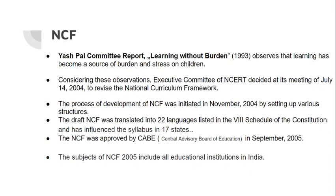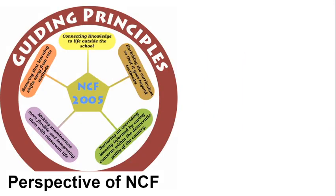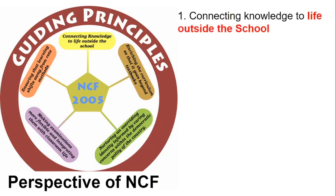Now let's move to the main topic — what are the main features and main principles on which NCF works. There are 5 guiding perspectives on which NCF basically operates. The first one says: do not limit children's knowledge only to books. Children should be able to have experiences outside as well — their life outside should also be supported by education. We should give them such knowledge.